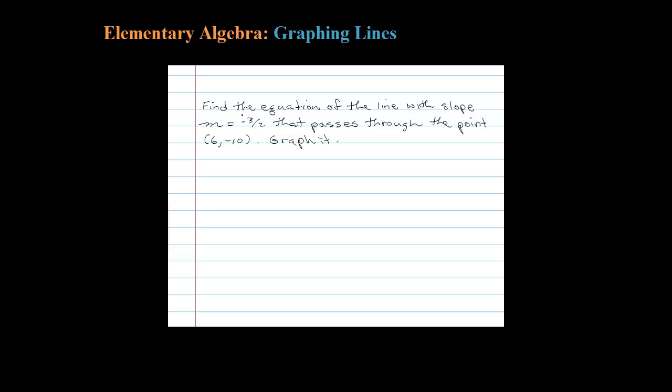Here we're asked to find the equation of the line with slope -3/2 that passes through the point (6, -10). There are a number of ways to do this, but I'm going to show you a method using slope-intercept form, in other words y = mx + b.